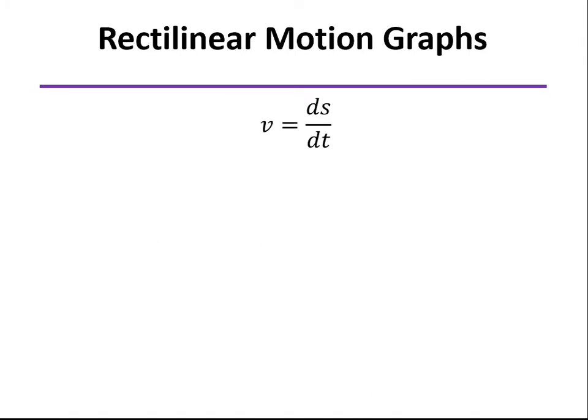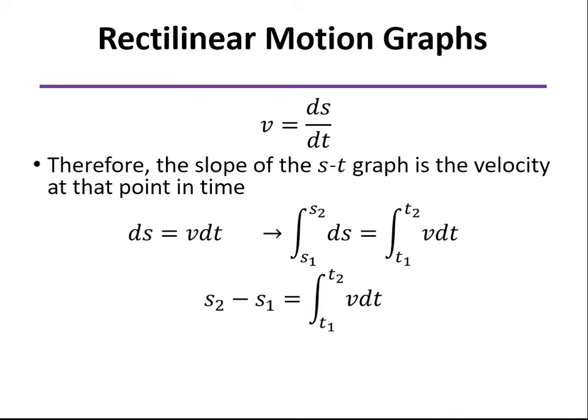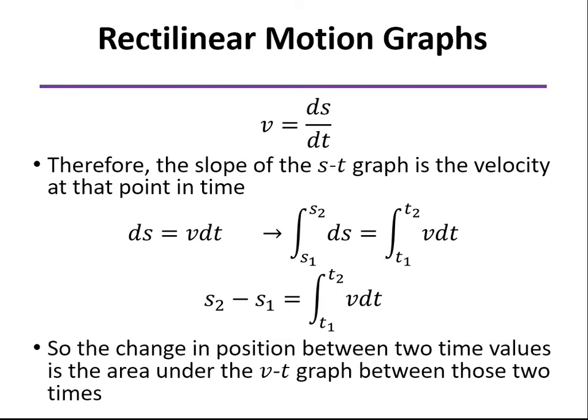Similarly, the derivative of position with respect to time is the velocity, so the slope of the position graph is the velocity. And again, rearranging things, we can see that the change in position is the area under the velocity graph between any two time points.